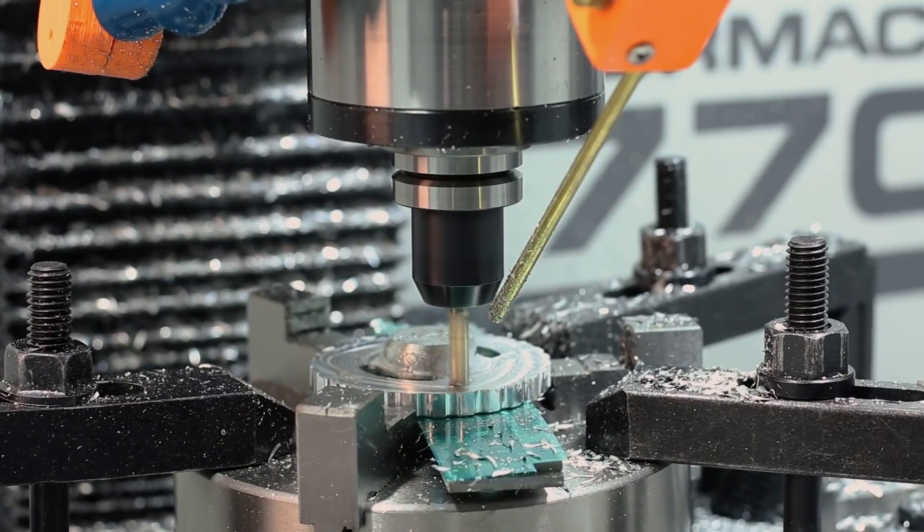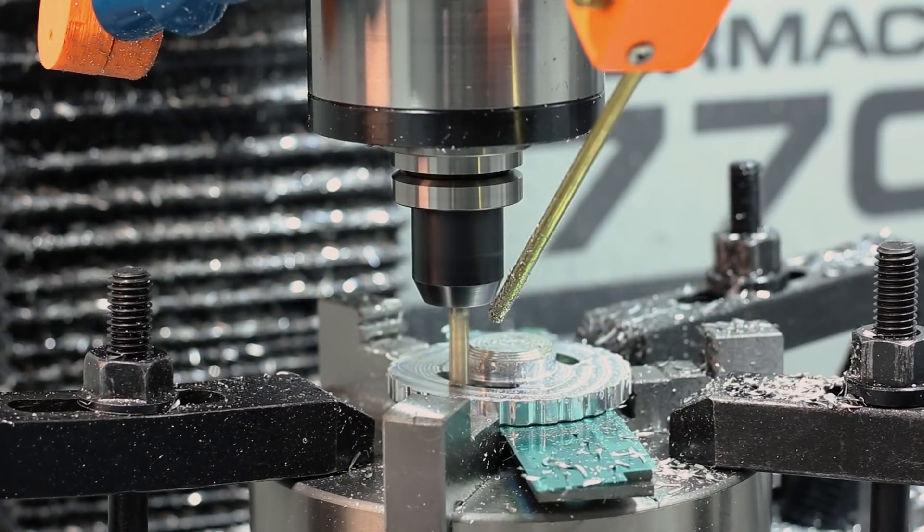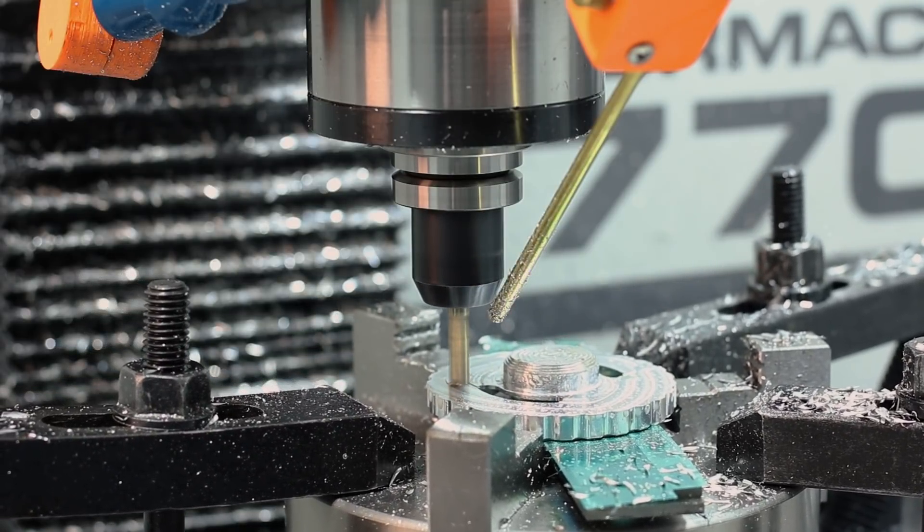And instead of using a horizontal toolpath to finish up the bottom, we use that exact same 2D contour as we did the last time to give it that cool triangular rotor shape.